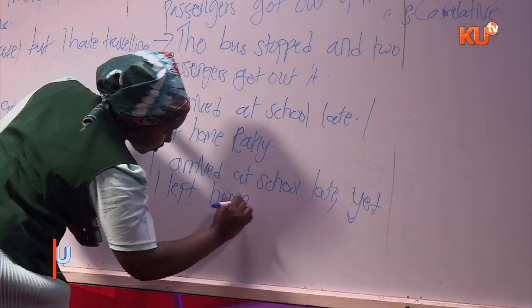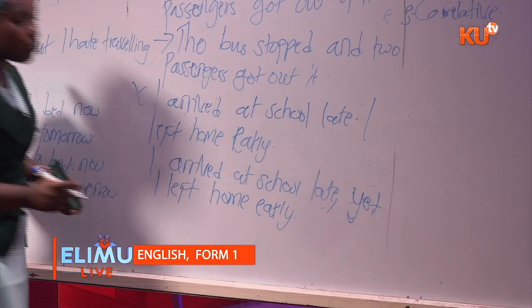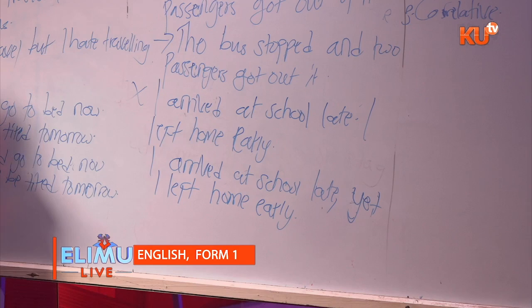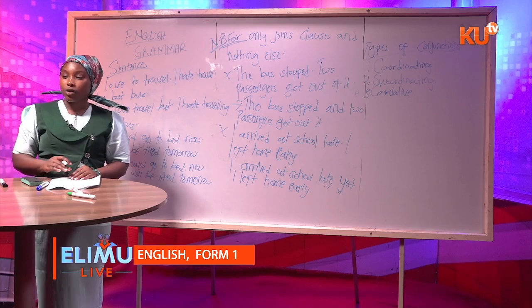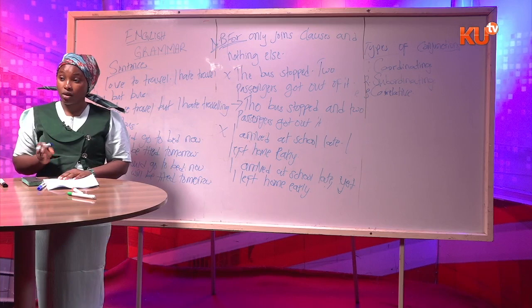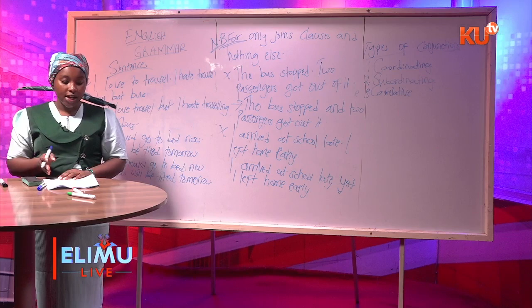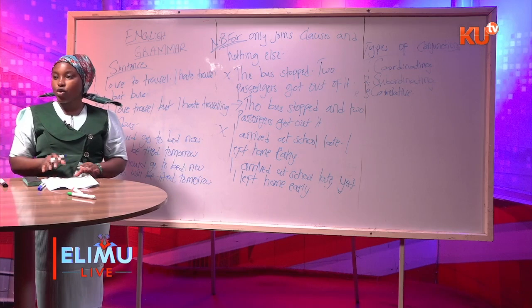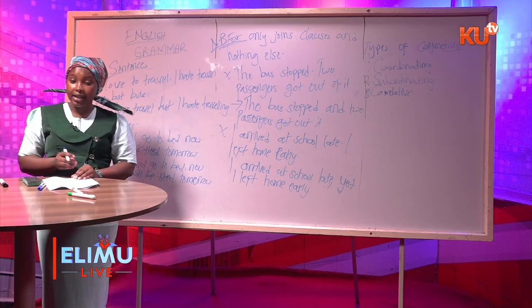We can say 'I arrived at school late, yet I left home early.' You can see we have used 'yet' to bring out the idea of contrast — this person arrived at school very late, but they had left home early. These are the seven coordinating conjunctions. Write FANBOYS in a vertical position to remember them easily, and note the use of each one.